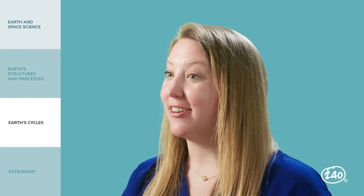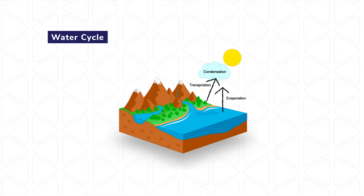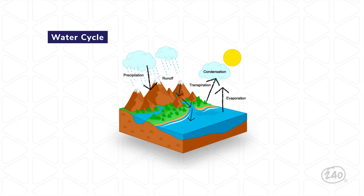Next up is Earth's cycles. Pay specific attention to the water cycle. Liquid water changes into a gas state — known as water vapor — and moves into the atmosphere through evaporation or transpiration. The water vapor rises into the upper atmosphere, where it cools and condenses, forming clouds. The droplets continue to stick together until they're too heavy to remain in the cloud, and fall back to Earth's surface as precipitation — rain, snow, sleet, or hail. The falling precipitation can land directly into bodies of water, or on land where surface runoff takes it into the bodies of water. It can also percolate into the ground and become part of the groundwater supply.